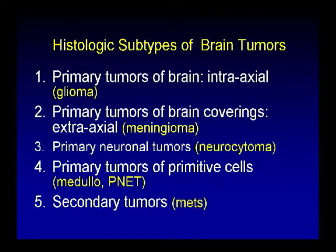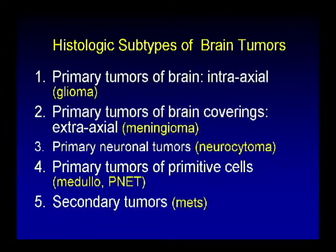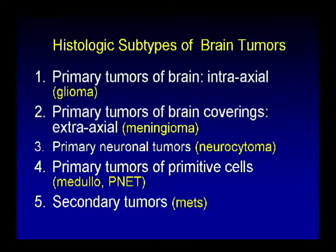Regarding histologic subtypes, the WHO — World Health Organization — updates classifications roughly every 10 years. The latest version included about 272 different types of histopathologic brain tumors, so we're dealing with an incredibly heterogeneous group. But in everyday practice, you'll really run into three or four types: primary tumors arising from brain parenchyma — the gliomas — primary tumors from the brain covering — most commonly meningioma — and secondary tumors or metastases, since systemic cancer is so much more common than any primary brain tumor.